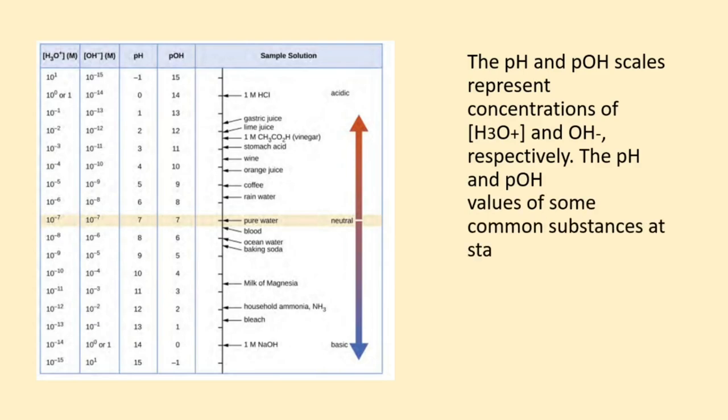The pH and pOH values of some common substances at standard temperature, 25 degrees centigrade, are shown in this chart.